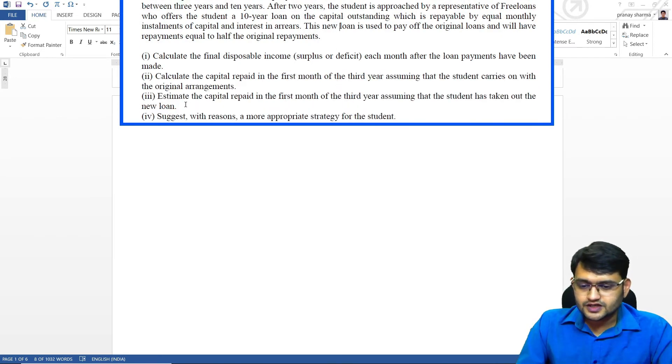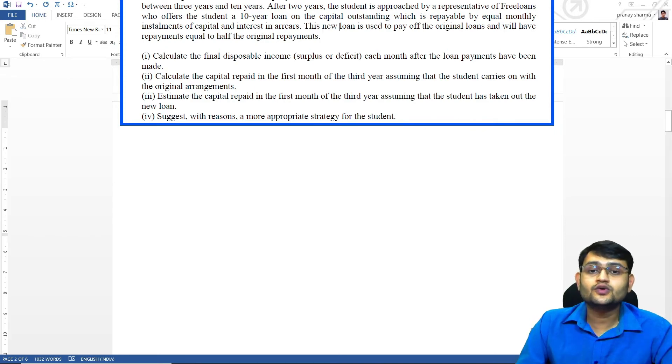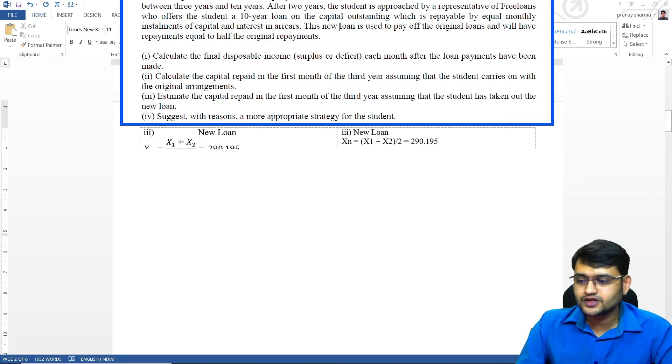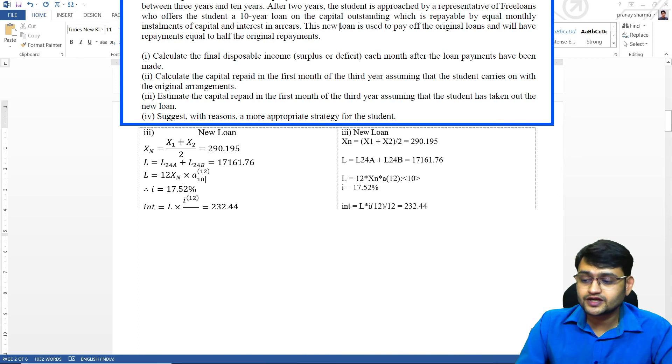So third part says estimate the capital repaid in the first month of the third year assuming that the student has taken out the new loan. For this new loan we are going to calculate how much is our new repayment, that is going to be x1 plus x2 divided by 2. Next thing we are going to calculate is the total loan amount that would be repaid in the next 10 years. So that would be the addition of those two loans. Third, we will calculate how much interest rate is being charged here. So we'll calculate using our basic loan formula and we'll get our interest rate. Then all we have to do is calculate the interest component and calculate the capital component. So that gives us answer for capital component as well.